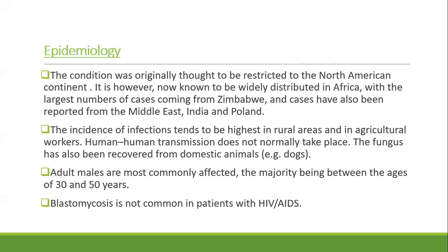The largest number of African cases come from Zimbabwe, and cases have also been reported from the Middle East, India, and Poland. The incidence of infection tends to be highest in rural areas and agricultural workers; human-to-human transmission does not normally take place, and the fungus has been recovered from domestic animals like dogs. Adult males are most commonly affected, the majority being between 30 to 50 years of age. Blastomycosis is not common in patients with HIV or AIDS.